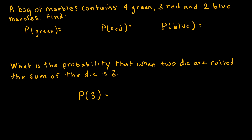We have a bag of marbles that contains 4 green, 3 red, and 2 blue — 9 total. The probability of green is 4 out of 9. Probability of red is 3 out of 9, which I can reduce. And probability of blue is 2 out of 9.